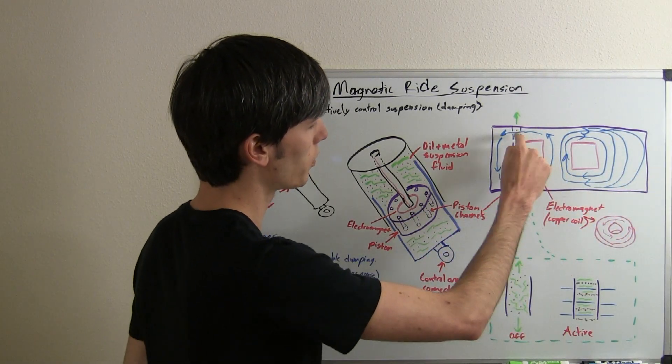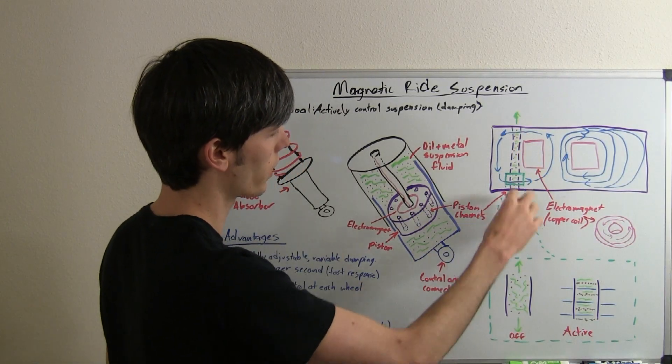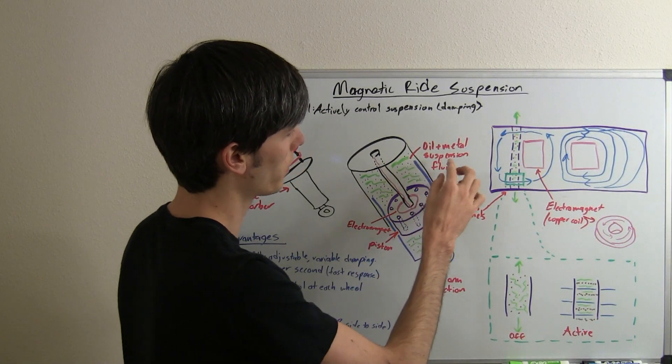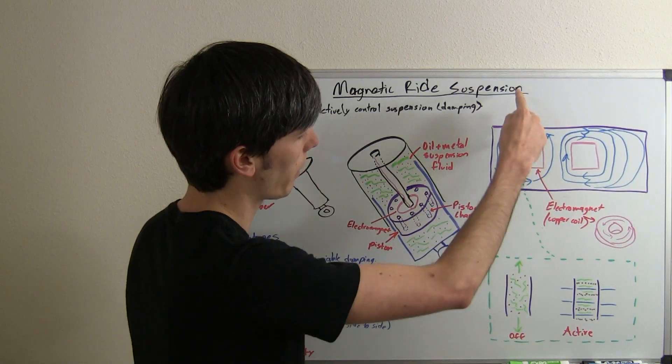So, this magnetic field is passing through these piston channels where our fluid, with the metal and the oil, is going to be passing through.